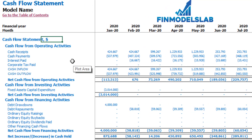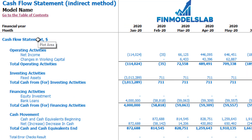On the cash flow statement you may see your cash flow broken down by cash flow from operating activities, investing activities, and financing activities. The same information appears on the indirect method cash flow statement — operating, investing, and financing activities — but in a more collapsed form that is easier to review.